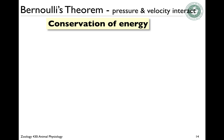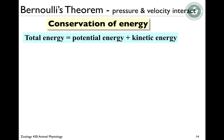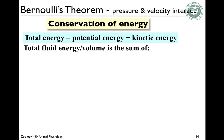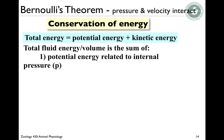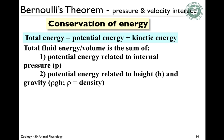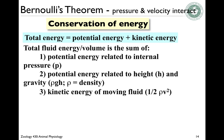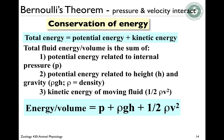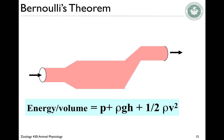In this case, pressure and velocity interact. The total energy in the system that must be conserved is a sum of potential and kinetic energy. Total fluid energy per volume is the sum of: potential energy related to internal pressure, potential energy related to gravity — height and gravity times rho, the density of the fluid, which determines the mass — and the kinetic energy of the moving fluid, which is one-half rho v squared. So energy over volume equals the two potential energies plus the kinetic energy.